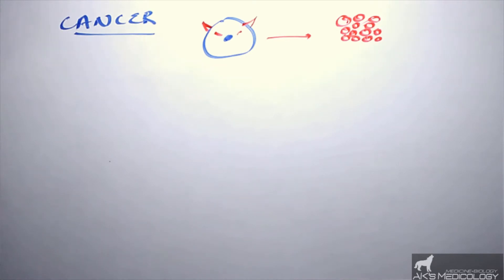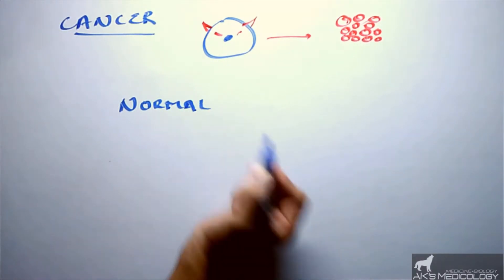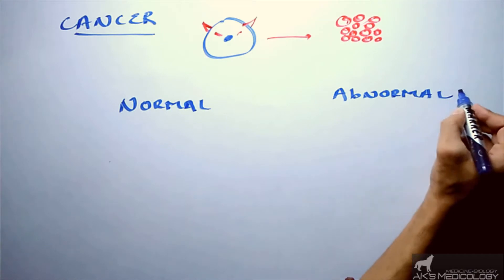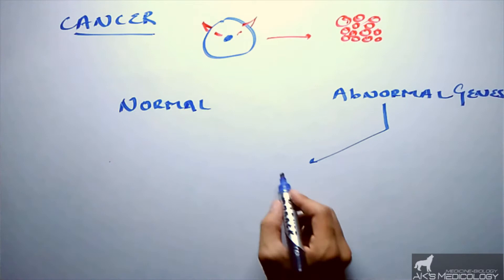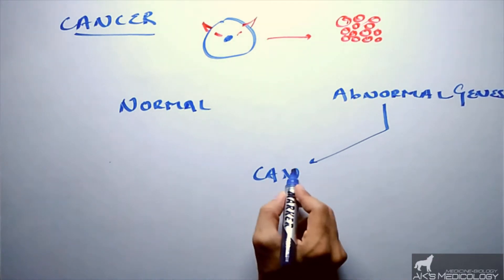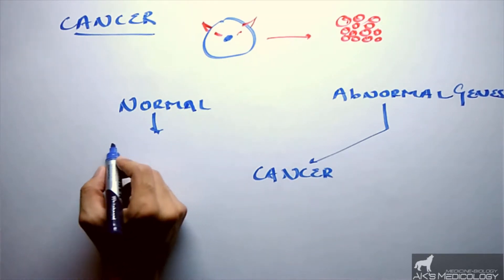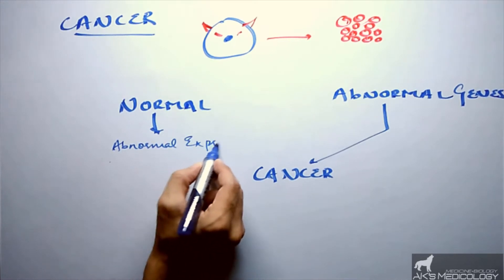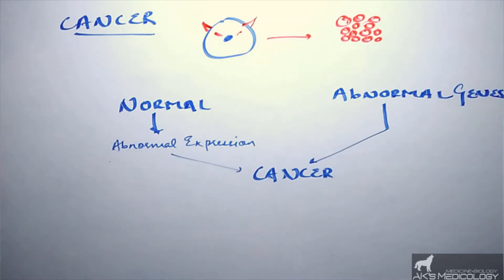The human body works on the principle of genes or genetics. There are some normal genes which function normally, and there are obviously some abnormal genes which function abnormally and may cause cancer. On the other hand, if normal genes are expressed abnormally or show abnormal expression, they may also lead to cancer or neoplasia.